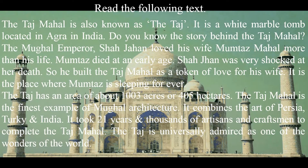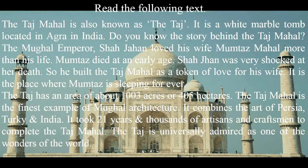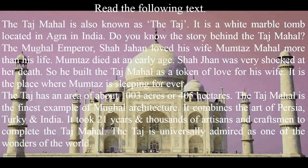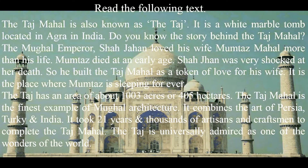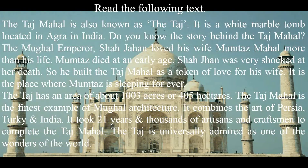The Taj Mahal is also known as the Taj. It is a white marble tomb located in Agra in India. Do you know the story behind the Taj Mahal? Mughal Emperor Shah Jahan loved his wife Mumtaz Mahal more than his life. Mumtaz died at an early age. Shah Jahan was very shocked at her death. So he built the Taj Mahal as a token of love for his wife. It is the place where Mumtaz is sleeping forever.